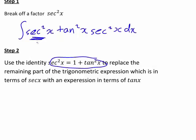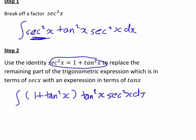We rewrite that with an expression in terms of tan x. In this case, since it is just sec squared x here, it'll be directly replaced with 1 plus tan squared x, and that's still multiplied by tan squared x sec squared x dx.